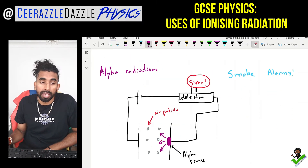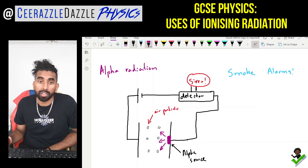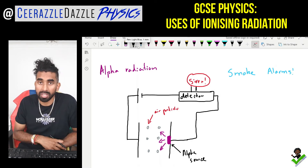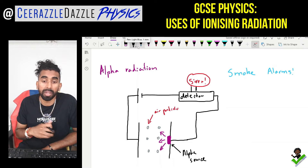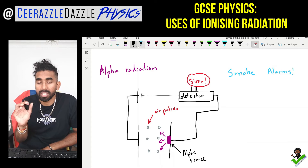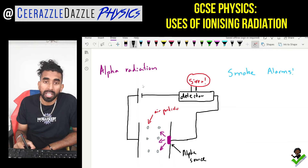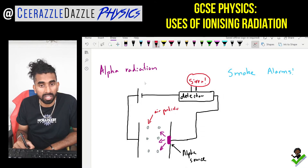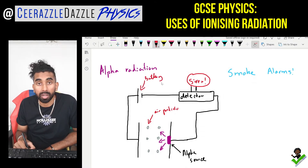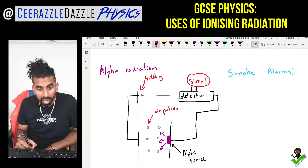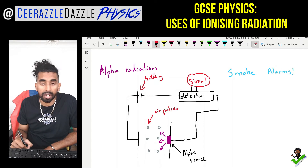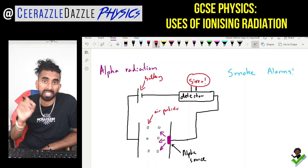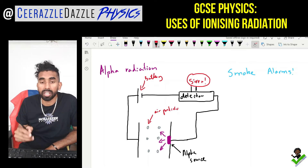Here's a use of alpha radiation — you probably didn't know this, but all of your smoke alarms at home actually have alpha radiation inside them. This is the inside of a smoke alarm. We've got a battery supply connected to a terminal, then there's a gap, another terminal, and it goes back to a detector, completing the circuit. The detector is connected to the siren, which makes the sound when the alarm goes off.